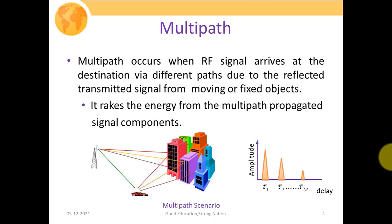First of all, we should understand what multipath is. Multipath occurs when radio frequency signals arrive at the destination via different paths due to reflected and transmitted signals from moving or fixed objects.